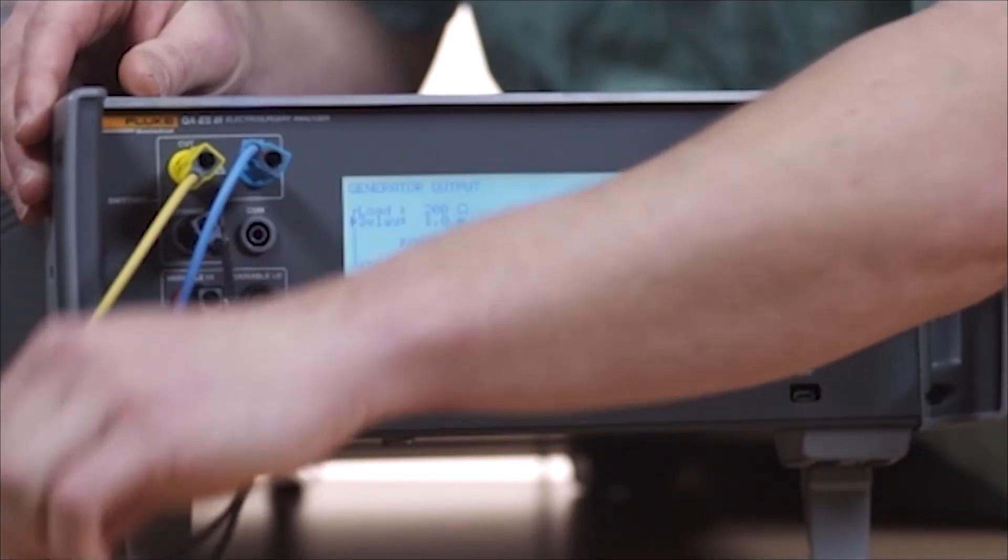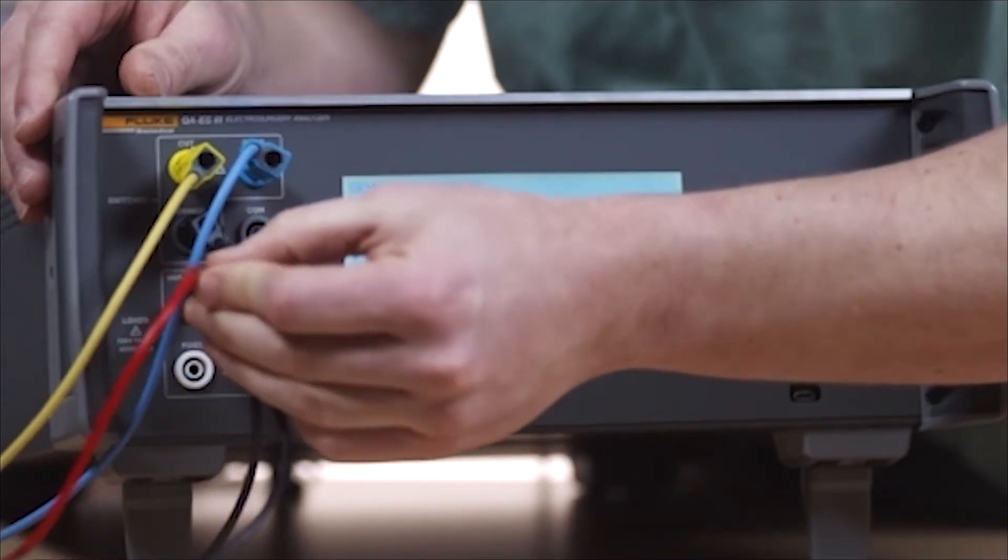Next, connect the ESU active electrode to the variable high-active electrode.